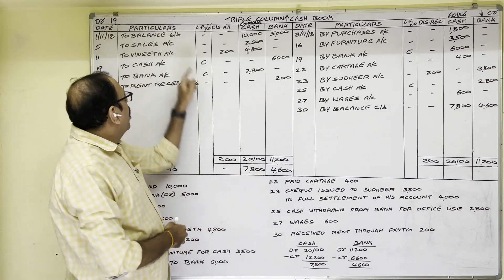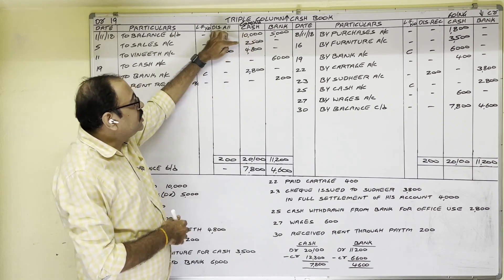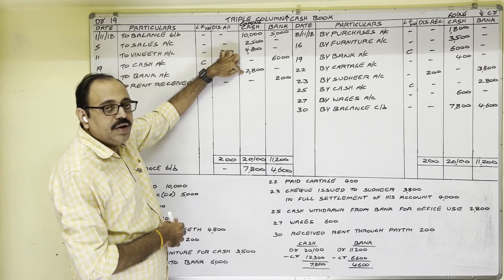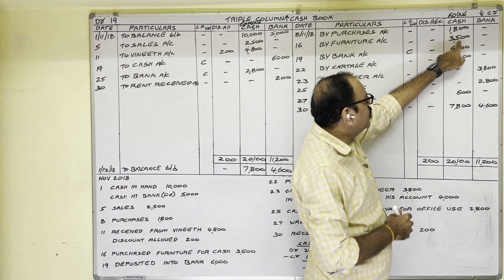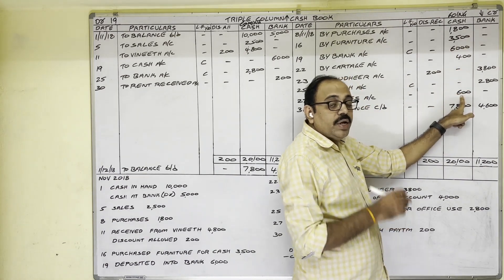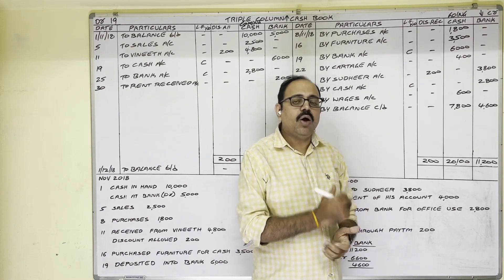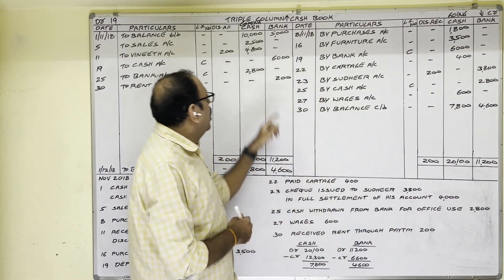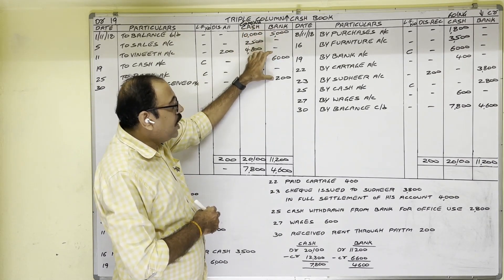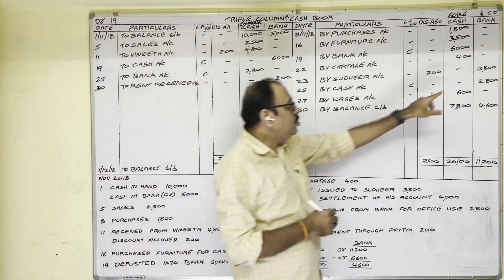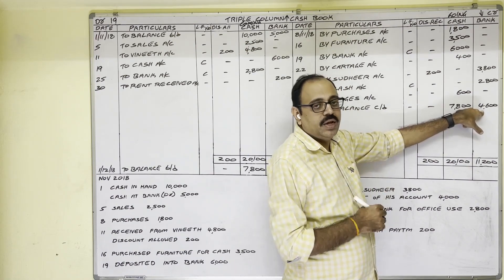What do these two answers mean? On 1st November 2018 our firm had a cash balance of 10,000. In November we received 2,500, 4,800, and 2,800 — total 20,100. We paid 1,800, 3,500, 6,400, and 600. So at the end of November, 7,800 should remain as per the account books. Similarly for bank: on 1st November we had 5,000, in November we deposited 6,200, and withdrew 3,800 and 2,800 — so 4,600 should remain in our bank account at month end.